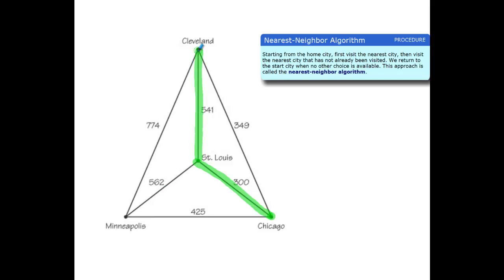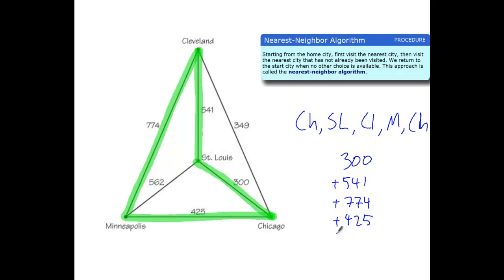And then once I'm at Cleveland, I only have one option. It's going to Minneapolis, so I have to go that. And I'm going to return back to Chicago. So my route was Chicago to St. Louis, to Cleveland, to Minneapolis, and back to Chicago. And find out the total distance we traveled. It was 300 plus 541 plus 774 plus 425. And when I add all of these together, I have my route, rather than doing the brute force and calculating all six.